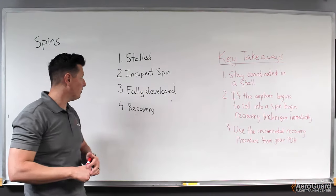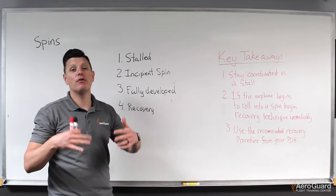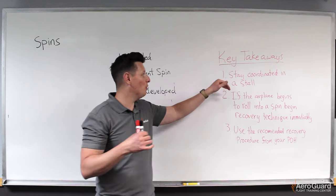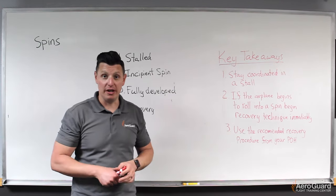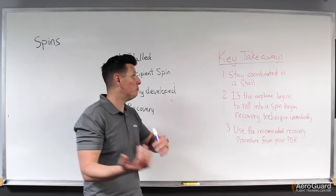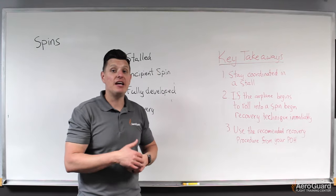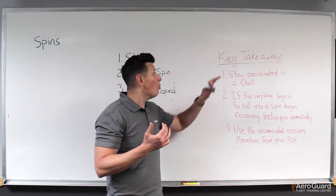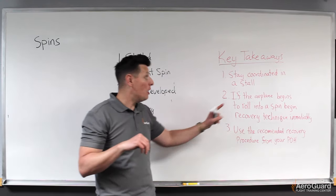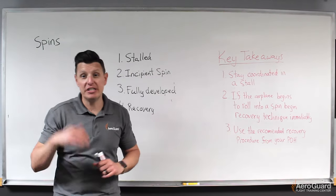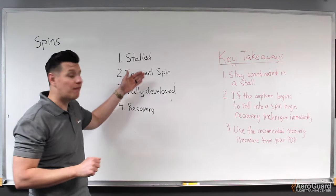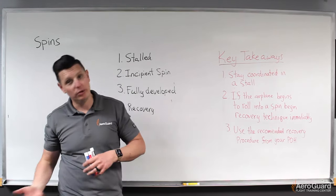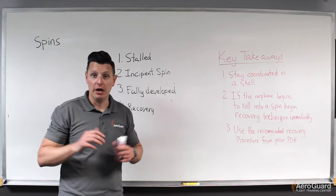So now we've walked through our four different phases of this spin. I want to just go over a few last key takeaways for you in this video. First is as we stall an airplane or if we're about to stall an airplane, remember to remain coordinated. This whole spin piece revolves around us being uncoordinated as we stall an airplane. So it should be a key takeaway for you that as you ever practice stalls or if you find yourself in conditions where you might be about to stall, remember to remain coordinated all the time. Number two, if the airplane does begin to roll into a spin, you should begin the recovery technique immediately. And what I mean by that is you don't have to wait for the stall to become fully developed to recover from it. If you see the airplane starting to yaw and roll to one direction, you can immediately begin your recovery technique or your recovery procedure.